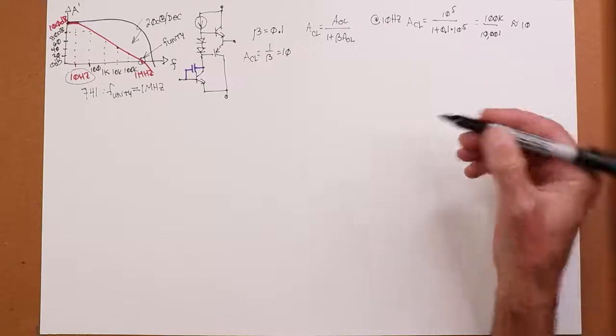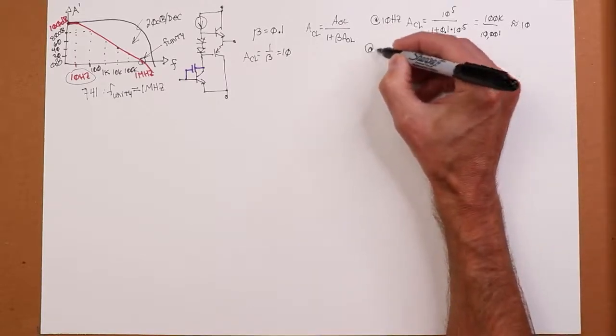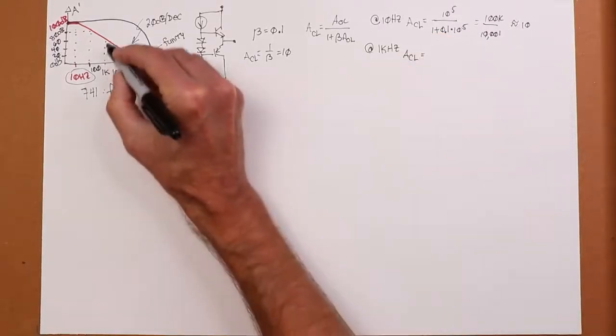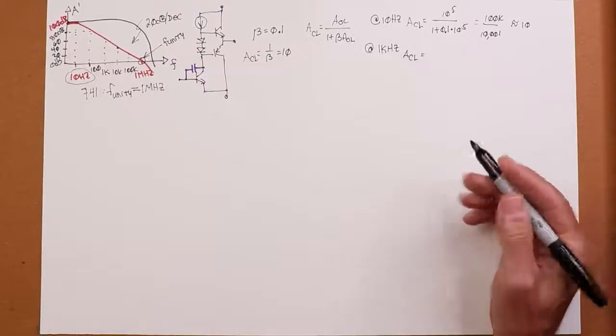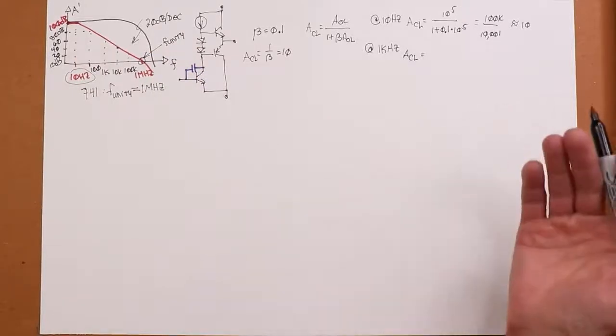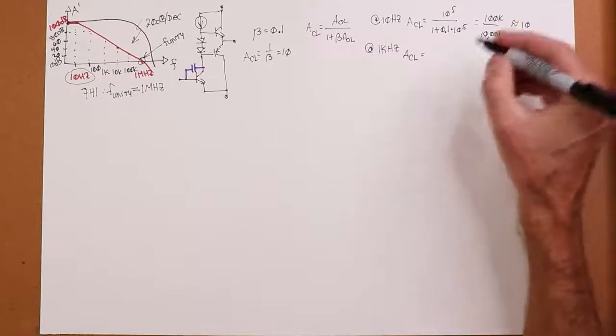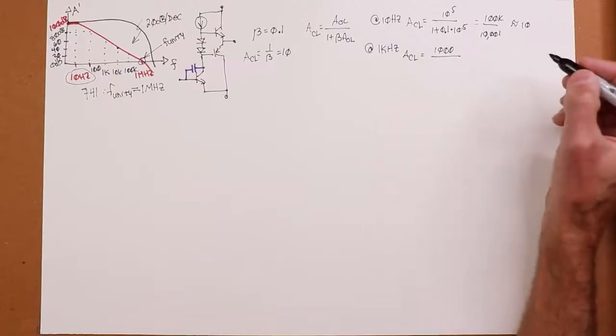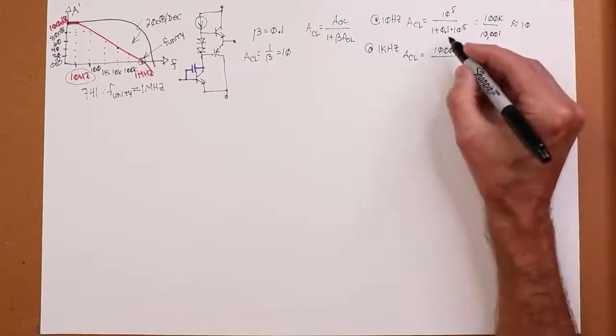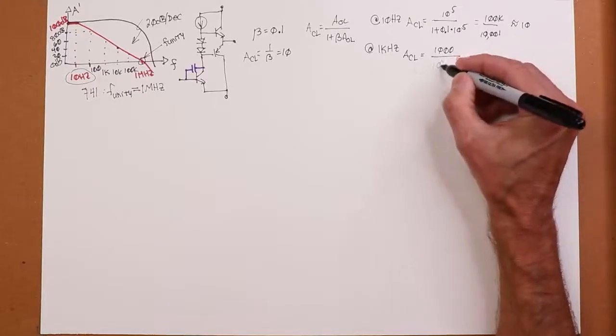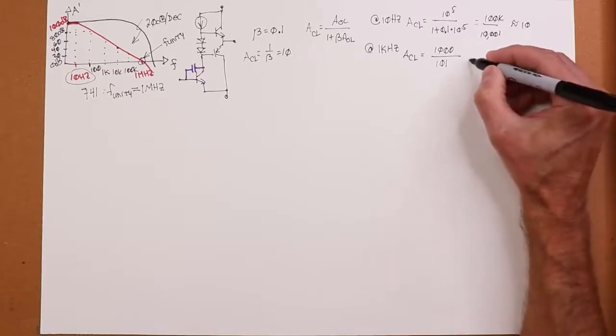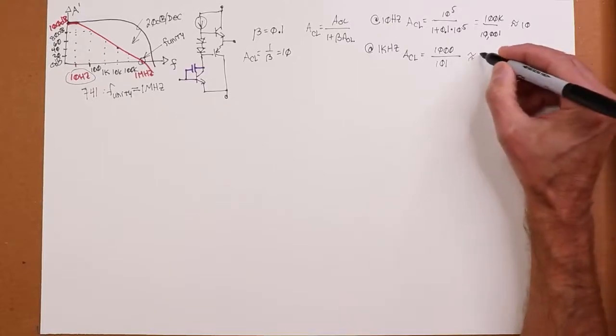And then if we jump up to a higher frequency, so let's try it at 1 kilohertz. What's our gain at 1 kilohertz? Well, we see that's 60 dB. Three factors of 20, that's 10 to the third, that's 1,000. So what we have is 1,000 over 1 plus 0.1 times 1,000. So that's 101. So again, you're just a little shy of 10, but roughly 10.